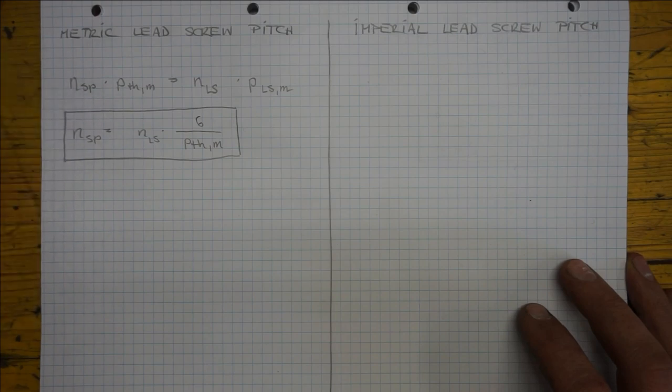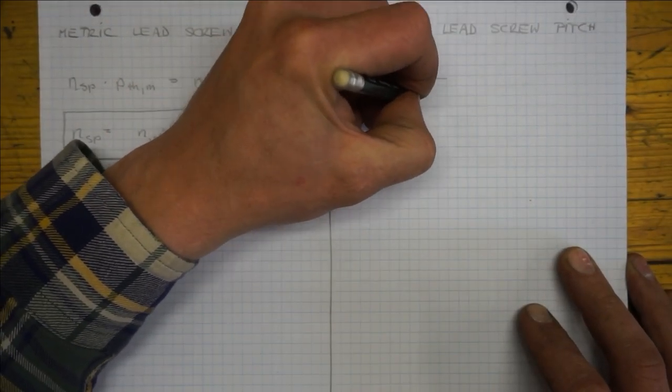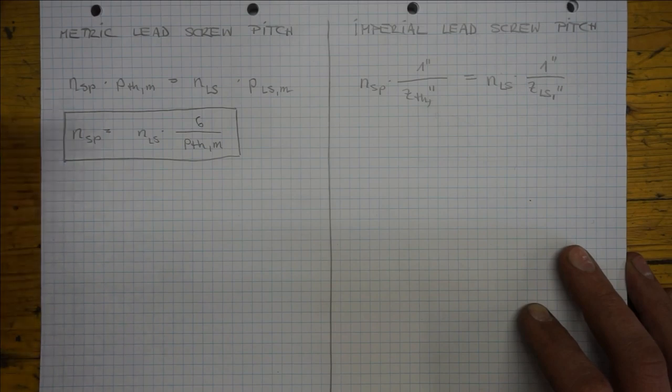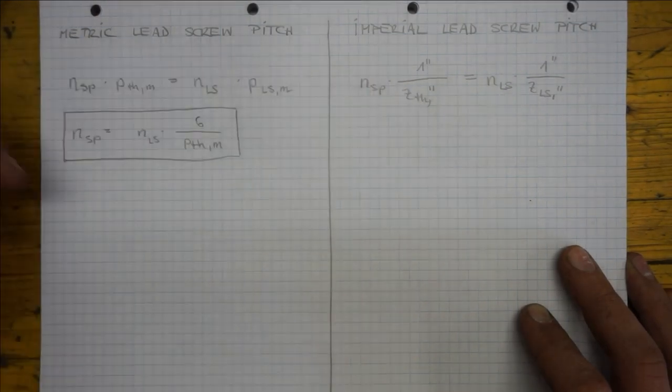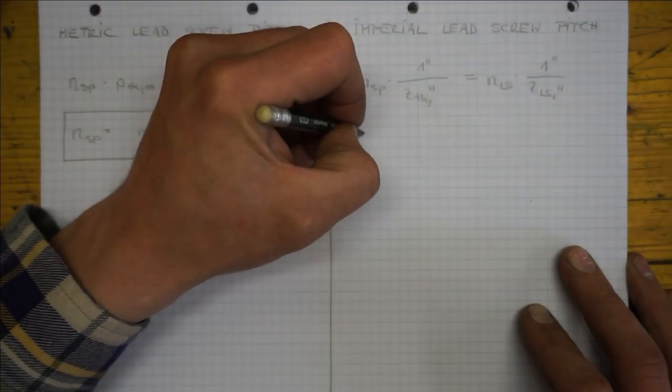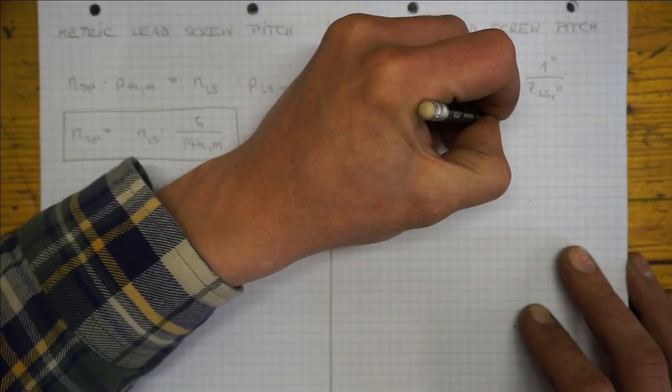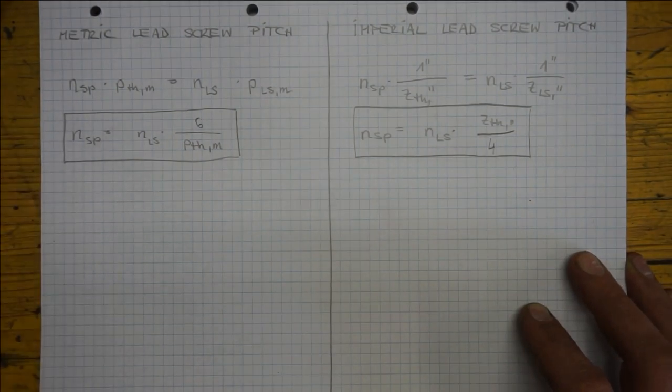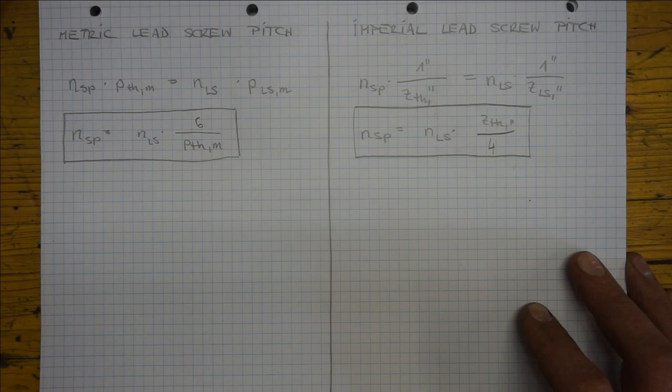We can derive this condition similarly for imperial pitch lead screw lathes. The only difference is that in the imperial world thread pitch is defined as the thread lead count per inch, which we term ZTH and ZLS respectively. Rearranged the threading condition is... I've put a 4 here instead of ZLS because a typical imperial lead screw pitch is 4 TPI.